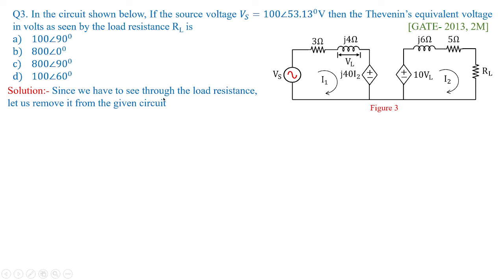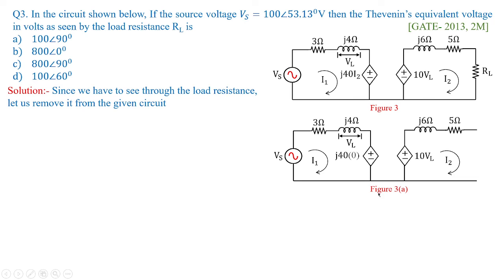Now, since we have to see through the load resistance, let us remove it from the given circuit. So figure 3 changes to figure 3A by removing the load resistance at this terminal. Once load resistance is removed, this becomes open circuit. In fact, 5 ohms in series with 6J ohms, they become open. Now, this becomes open circuit.